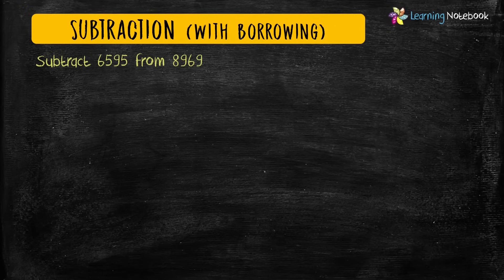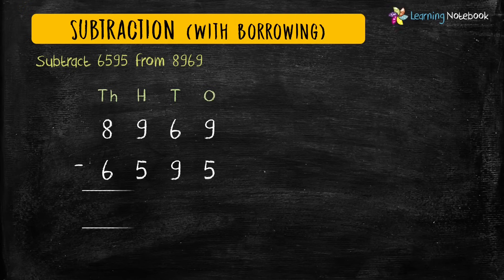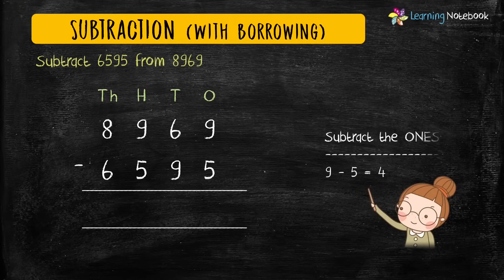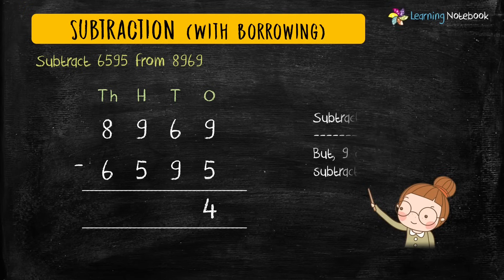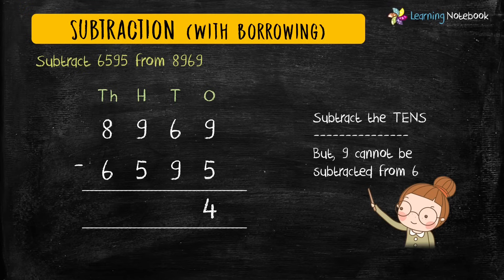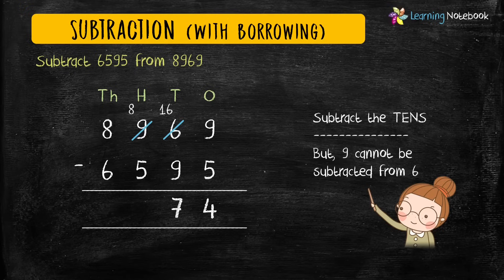Let's first write these numbers in columns. Now let's subtract the digits at ones place: 9 minus 5 equals 4. Next, subtract the digits at tens place. But 9 is bigger than 6, so 9 cannot be subtracted from 6. We will borrow 1 from the hundreds place, so 9 becomes 8 and 6 becomes 16. Now we can easily subtract the digits at tens place: 16 minus 9 equals 7.